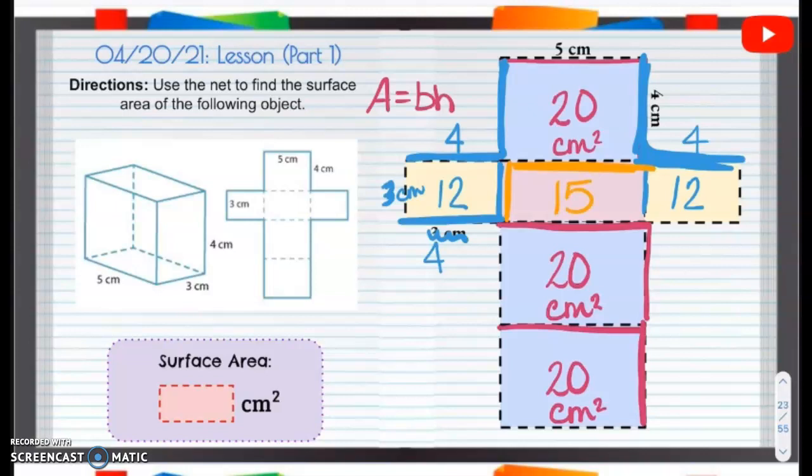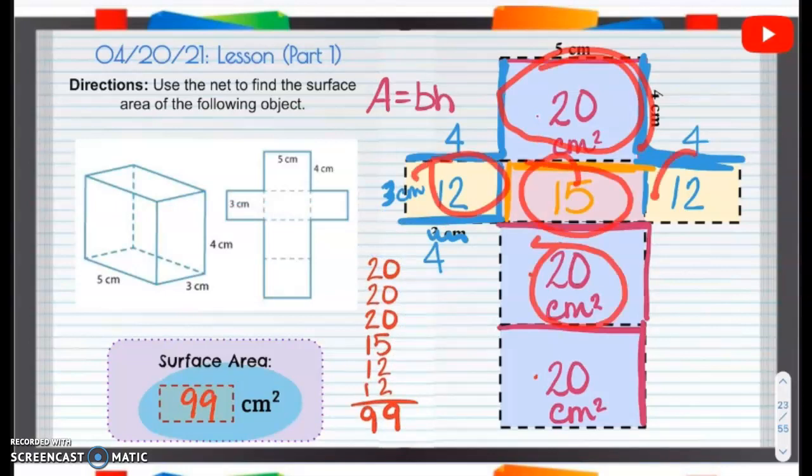Now if we add all of these up, we have 20 plus 20 plus 20, 20, 20, 20, plus 15, plus 12, plus 12. So I got 99 centimeters squared. All I did was take the area of each of those, of each of these rectangles, and I add them up together.